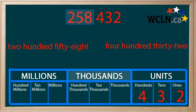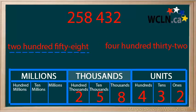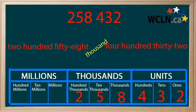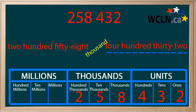Of course, we know because of its place value it isn't just two hundred fifty-eight. There are two hundred thousands, five ten thousands, and eight thousands. But to say the number word, just say two hundred fifty-eight, and then the period name thousands. A helpful hint is to think of the space between the thousands and the units as a place to say the word thousand. To say all six digits, put this together with the units period: two hundred fifty-eight thousand four hundred thirty-two.